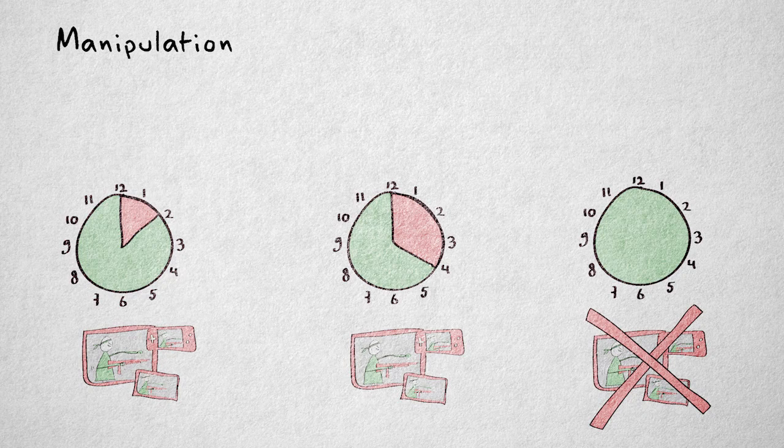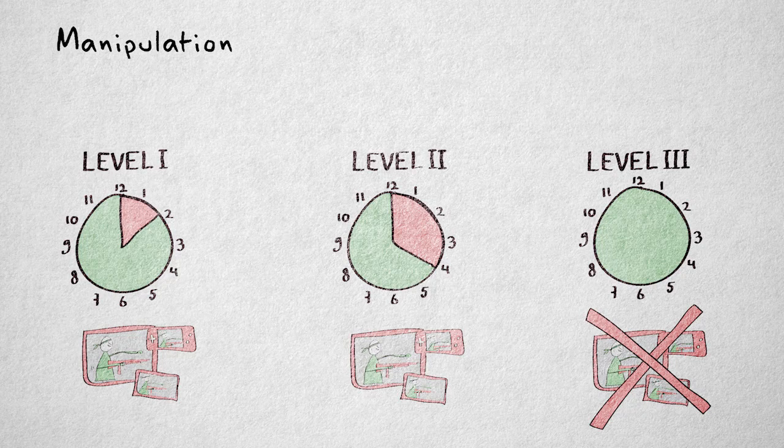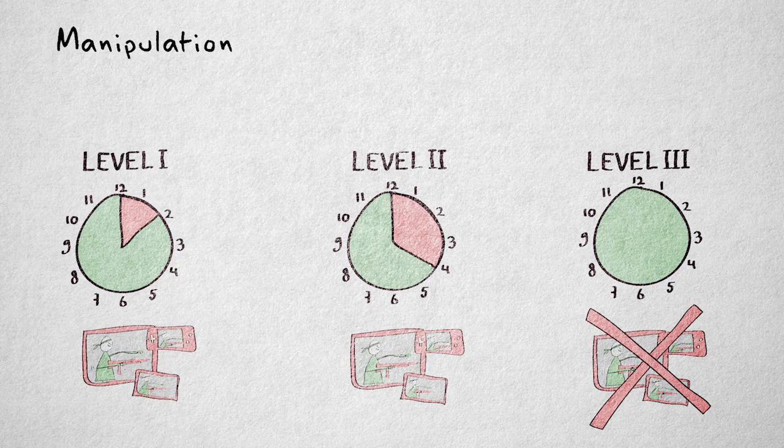In this case, we've created three levels of the independent variable, violent imagery. The term levels nicely indicates that the independent variable is present in different ways or to different degrees in these three settings. Other frequently used terms are conditions and groups.